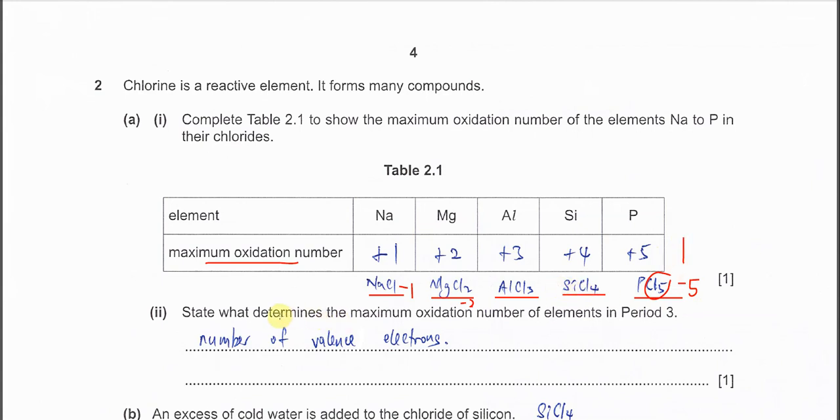Part 2: state what determines the maximum oxidation number for all these elements in period 3. This is quite easy because we know they are group 1, 2, 13, 14, 15. This has one valence electron, two valence electrons, three valence electrons, four and five valence electrons. Therefore the number of valence electrons is the key to determine the oxidation number. The answer is number of valence electrons.